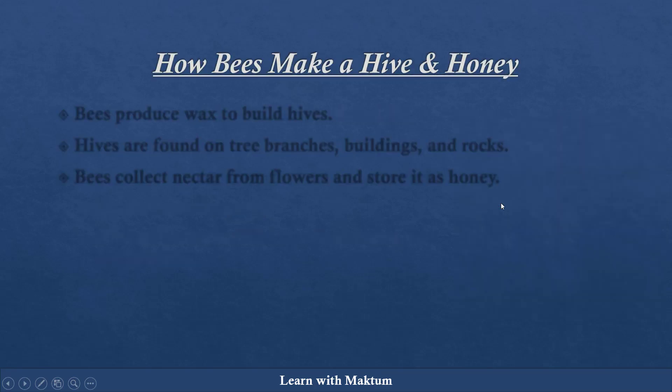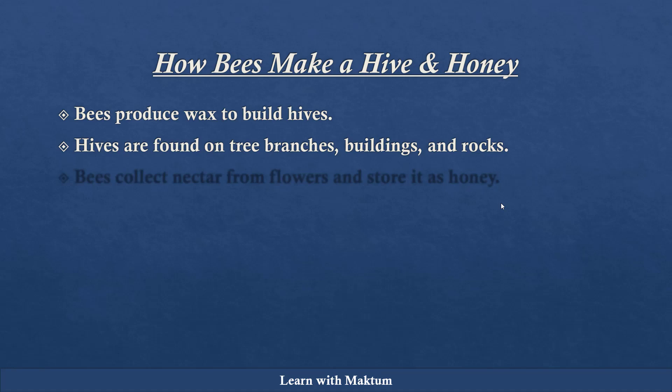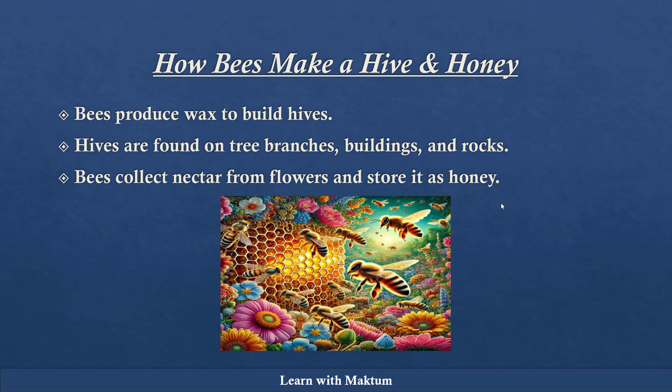How do bees make a hive and honey? Bees produce something called wax, and that wax is used to build the hives. You should remember this word — wax — which is used to build the hives. Hives are found on tree branches, buildings, and rocks. You may have seen on some tree branches there will be a group of bees which have built their hive. Now bees collect the nectar from flowers — you may have seen bees sitting on flowers, sucking the nectar — and they store that nectar in the form of honey in their hive.